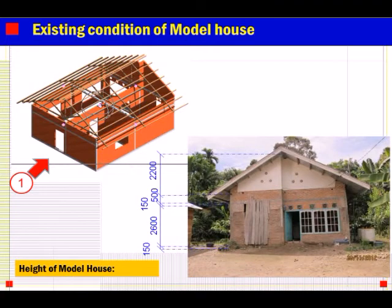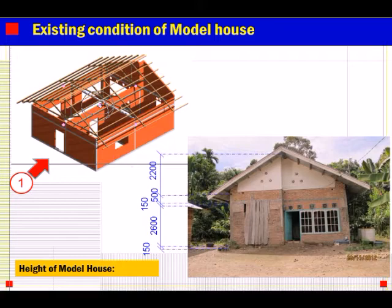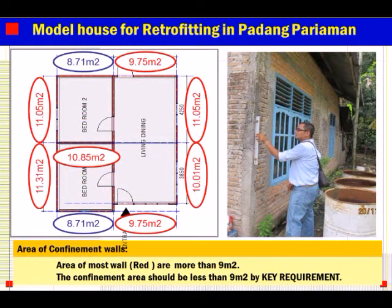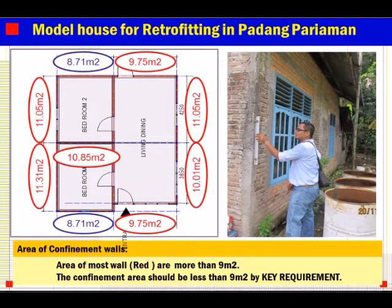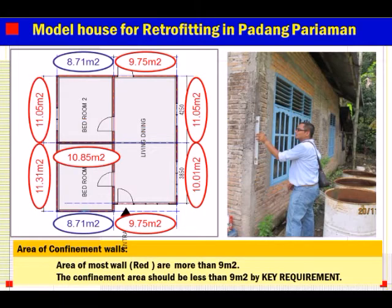This is the height of the model house. There is a ring beam, and there is a lintel beam — that height is 2.6 meters. There is also a gable hole. This is the area of confinement walls. The red part is more than 9 square meters. It means confinement area should be less than 9 square meters per the key requirement. So most walls are not following the key requirement.